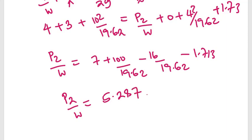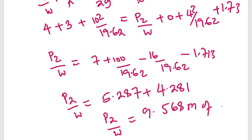Continuing the calculation, P2 over W is equal to 9.568 meters of the liquid.